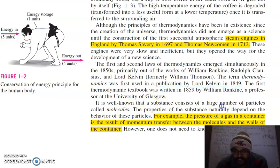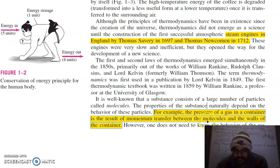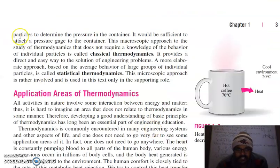It is well known that a substance consists of a large number of particles called molecules. The properties of a substance naturally depend on the behavior of these particles — whether it is strength, pressure exerted by a gas, or behavior under high pressure and high temperature. For example, the pressure of a gas in a container is a result of momentum transfer between the molecules and the walls of the container. However, one does not need to know the behavior of individual gas particles to determine pressure — it would be sufficient to attach a pressure gauge to the container.